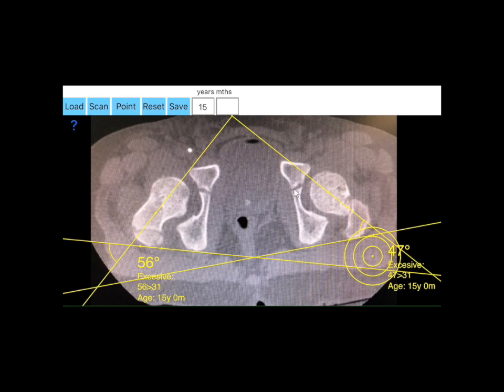Normal values according to patients' age especially in clinical settings are hard to be remembered. Monitoring of femoral antitorsion is indicated especially in cases with torsional malalignment syndromes and cerebral palsy.